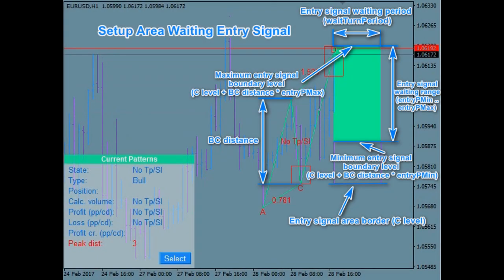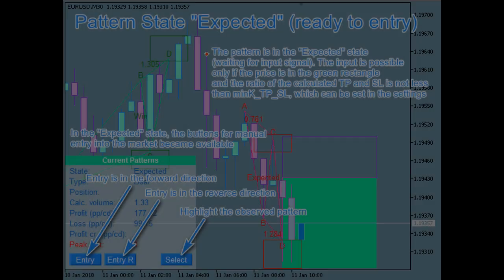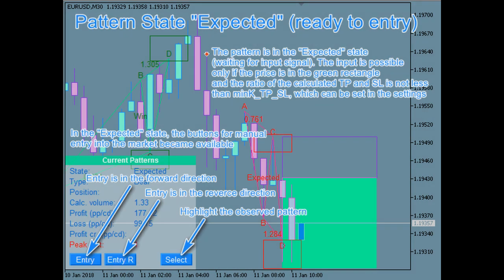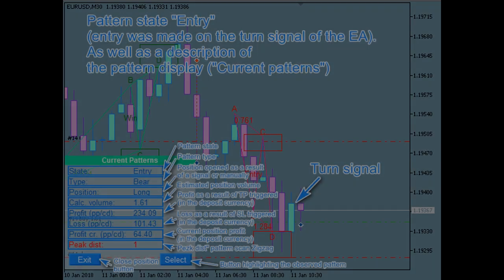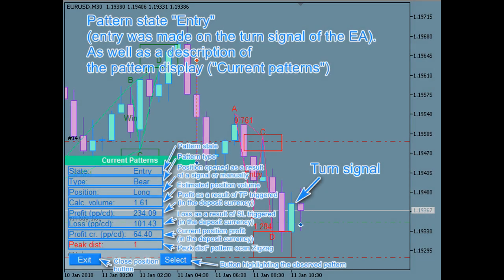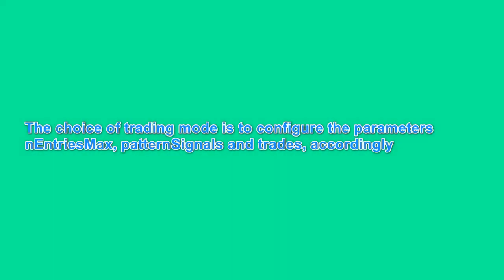Set up area waiting entry signal, pattern state expected, ready to entry, pattern state entry, and pattern display. The choice of trading mode is to configure the parameters and entries max, pattern signals and trades accordingly. Enable alert notifications.